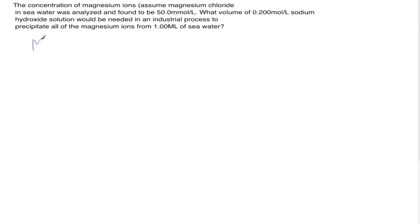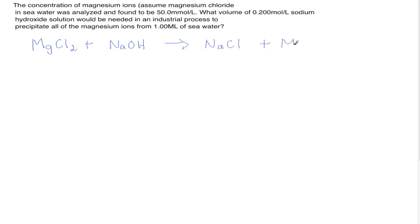The first step is to write the balanced reaction. We have magnesium chloride, MgCl₂, plus sodium hydroxide, NaOH, which produces — through a double replacement — sodium chloride plus magnesium hydroxide.